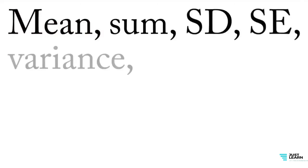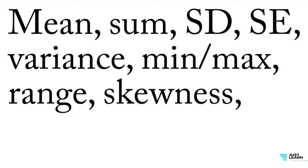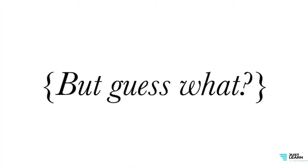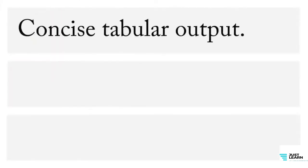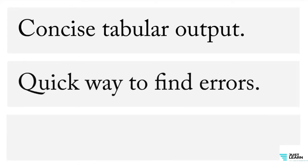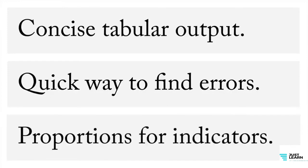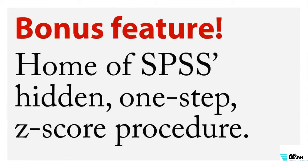Descriptives can give you the mean, sum, standard deviation, standard error, variance, minimum and maximum, range, skewness, and kurtosis. It does three things particularly well. First, it gives very concise, compact, tabular output — easy to see a lot of information in a small space. Second, it's a quick way to find obvious errors in coding in your data. Third, you can get proportions for indicator variables — zero/one variables. Also, descriptives is the home of SPSS's hidden one-step z-score procedure. I've seen people knock themselves out trying to get z-scores by computing standard deviations and means — you don't have to do any of that, you just click one button and you're done.